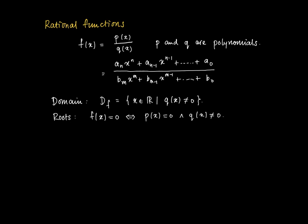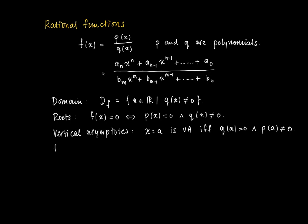The roots are all values of X such that F of X equals zero — these are the zeros of P — with the additional condition that Q of X should not be equal to zero. We have a vertical asymptote when there is extraordinary behavior near a point where Q of a equals zero and P of a is not equal to zero.